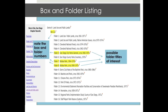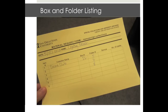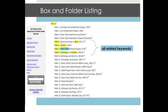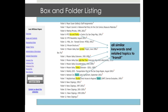As you are browsing the box and folder list, keep track of interesting folder titles by noting the folder number and box number — you'll need this information when you come to Special Collections to see the materials. When you find a folder title that sounds significant for your research, or when you find a folder title with your keyword, also look at the titles around it, as there may be similar folders nearby. Remember to think broadly about the topic you are researching. For example, if your topic is the development of local rapid transit systems, a folder entitled Trolley Extension might also contain relevant documents for your project.